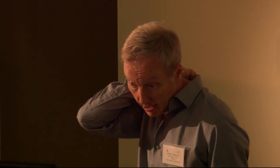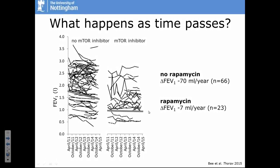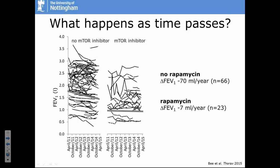Over time, each line on this graph represents a patient at the LAM Centre, with each line measuring FEV1, one of the major tests of lung function. There's a big variety — some people have good lung function, some have low lung function. Most of these lines are drifting down a little. Lung function does fall over time in everyone after about age 25. The average loss at our centre is about 70 millilitres per year — roughly three times faster than somebody without a lung disease.